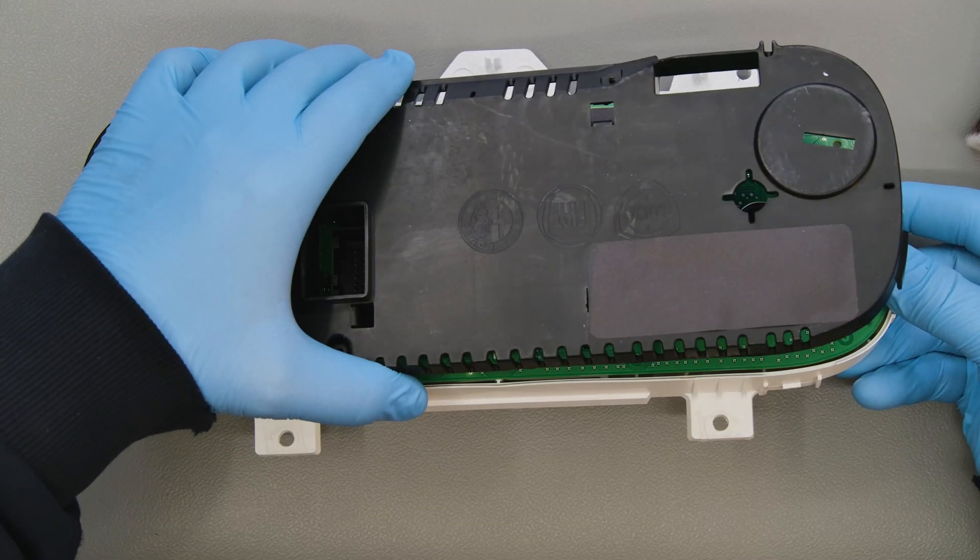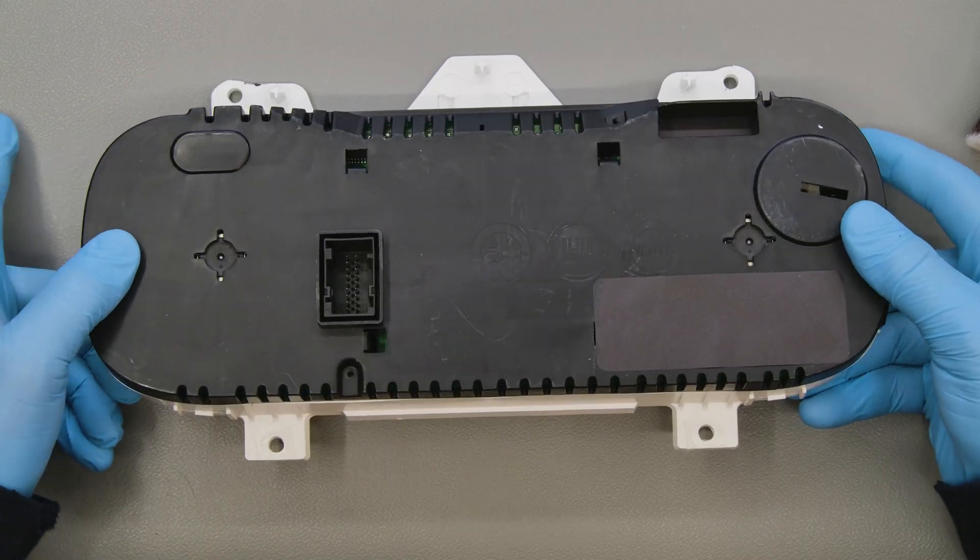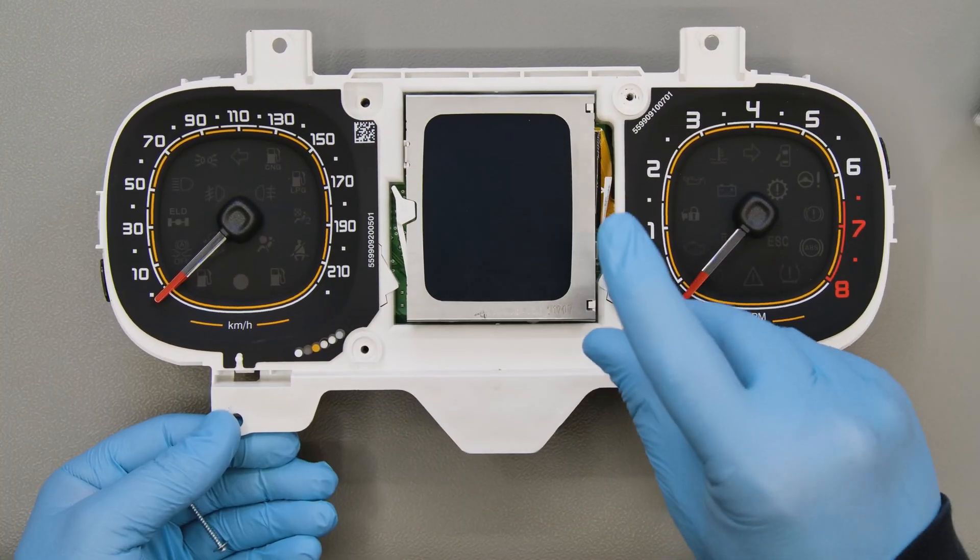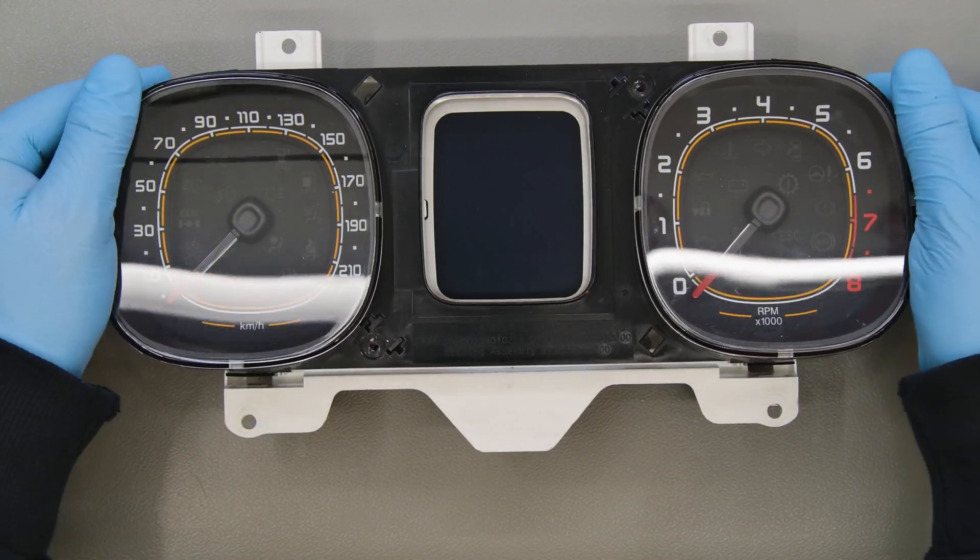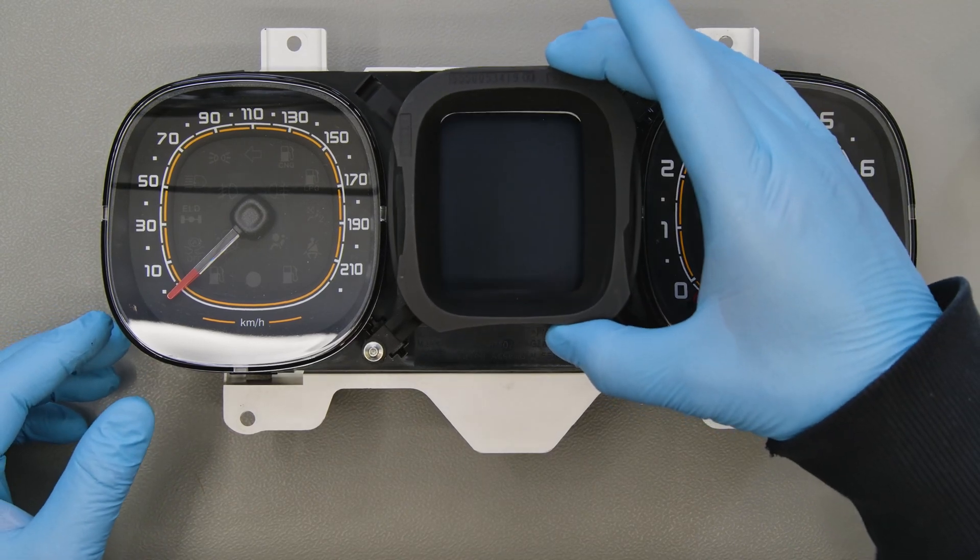Put back the rear plastic and tighten the two screws to secure it. Re-insert the front part. Tighten the central frame.